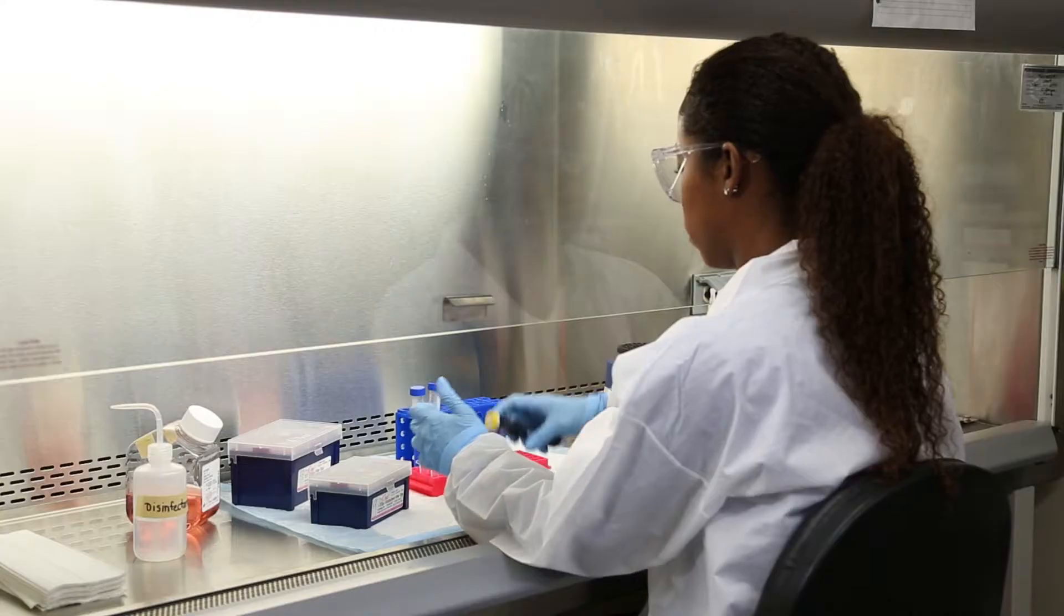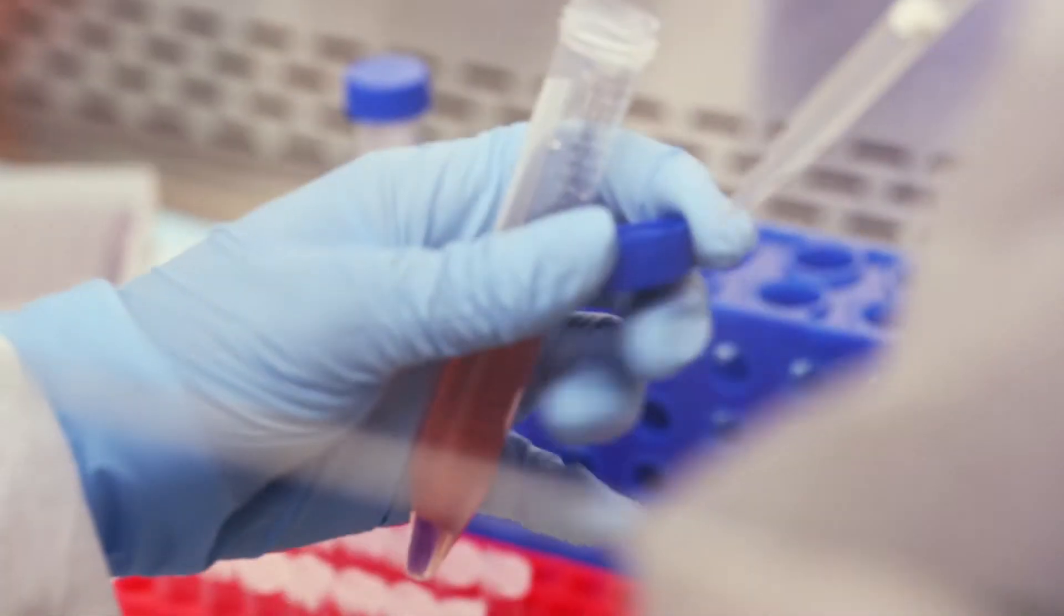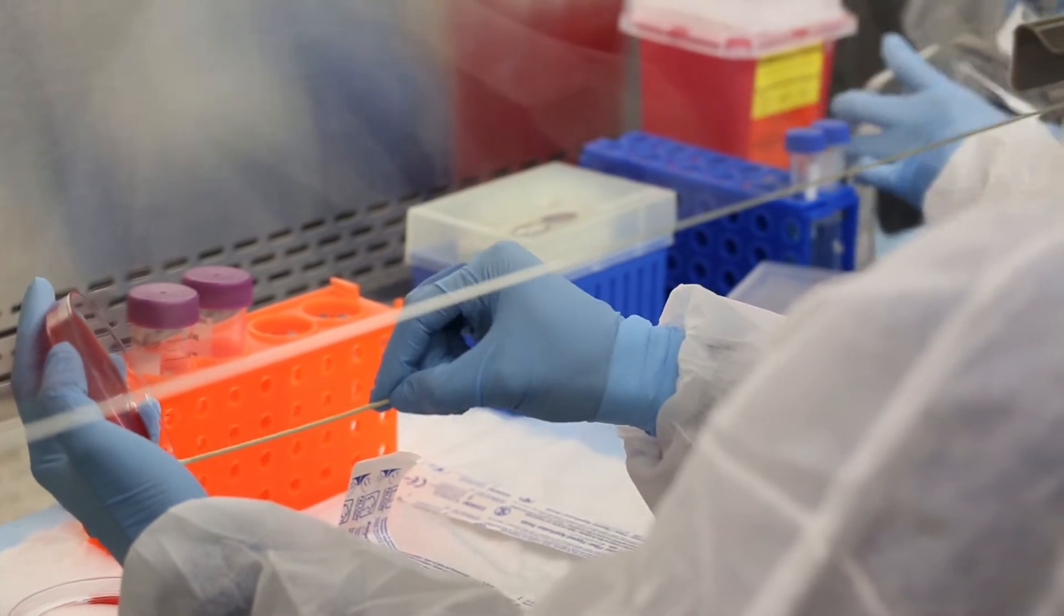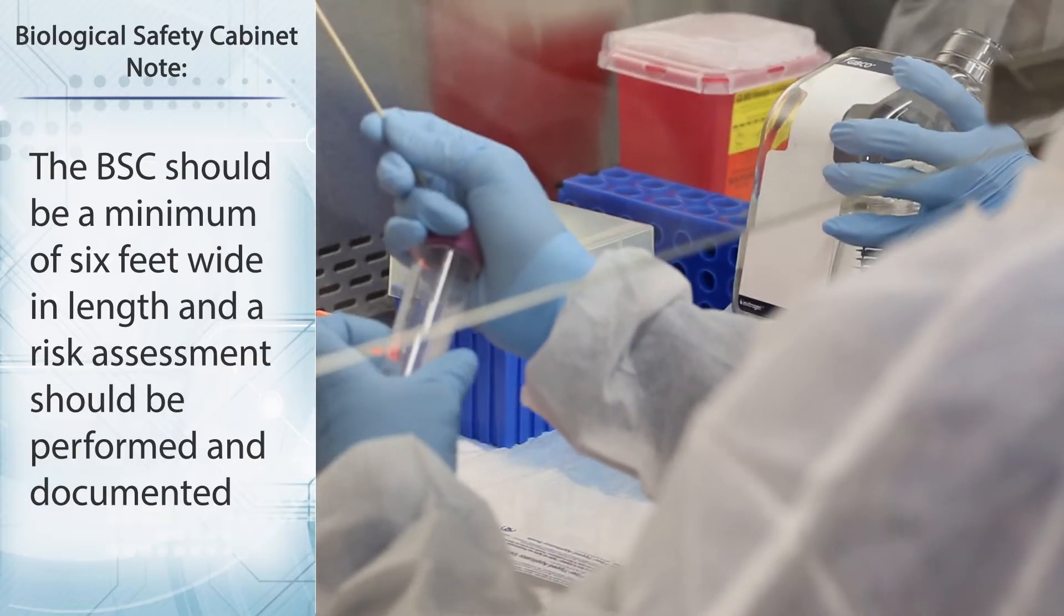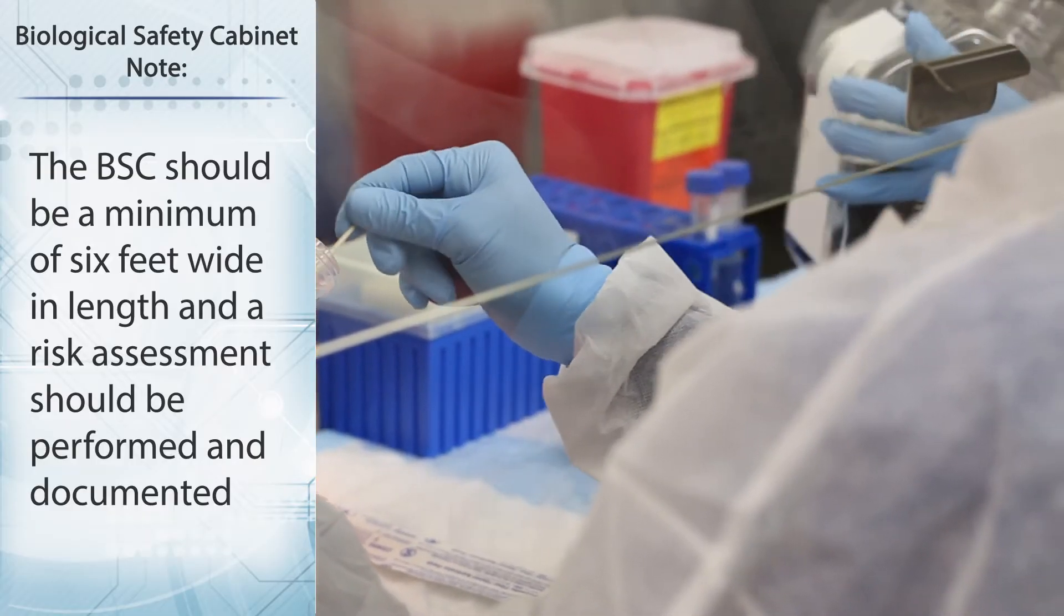Items should be placed as far back in the cabinet as possible without blocking the rear grill. While working in a BSC, you should be seated and only one person should work in the BSC at a time. If two people need to work in the BSC at the same time, the BSC must be a minimum of six feet wide in length and a risk assessment must be performed and documented.